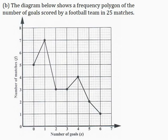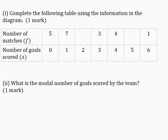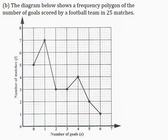Part B: The diagram below shows the frequency polygon of the number of goals scored by a football team in 25 matches. Part 1: Complete the following table using the information in the diagram for one mark. Now the missing number of matches occur when the number of goals scored are 2 and 5. So from the frequency polygon here, when the number of goals scored is 2, the number of matches is 3.